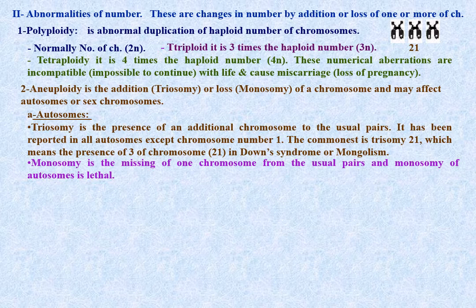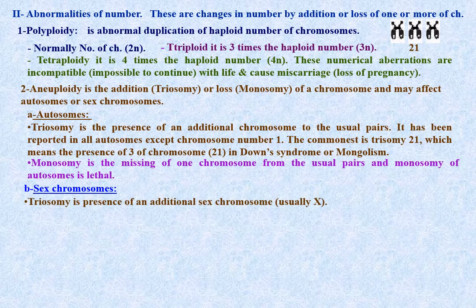Monosomy is the loss of one chromosome from a pair; monosomy of autosomes is lethal. Sex chromosome trisomy is the presence of an additional sex chromosome, usually X. Normally males have XY and need both for sex differentiation, while females have XX, one of which is inactive and coiled, called sex chromatin or Barr body, making females positive for sex chromatin.